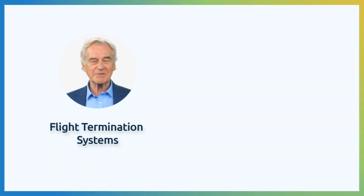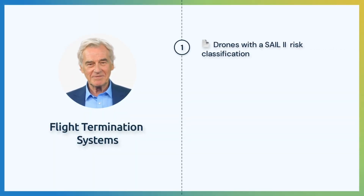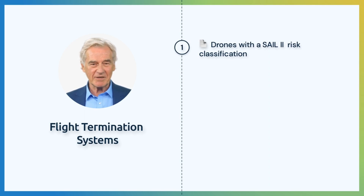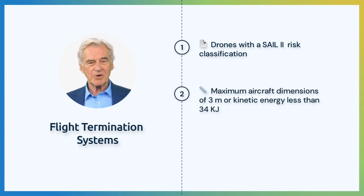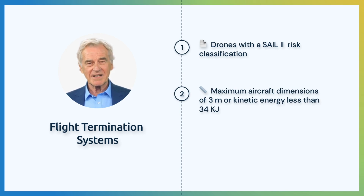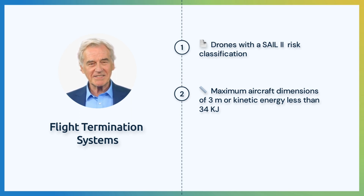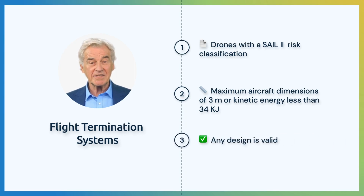The FTS is applicable to the following: drones operated in the specific category with a SAIL-2 risk classification according to SOAR methodology; aircraft dimensions equal to or less than 3 meters, taking into account the limitations of the FTS to be able to act on an aircraft of this size. Larger aircraft can be allowed as long as its kinetic energy is less than 34 kJ. Any aircraft design is valid.